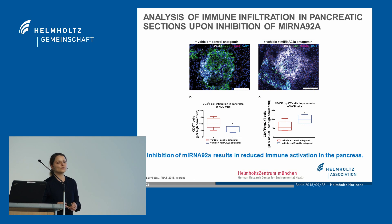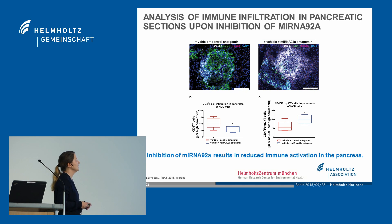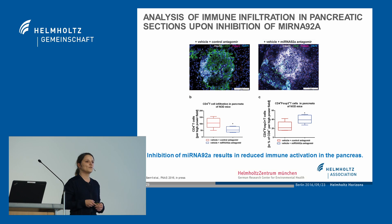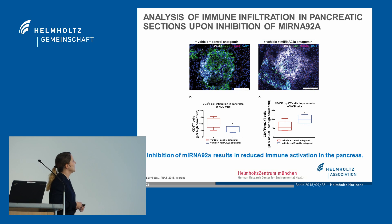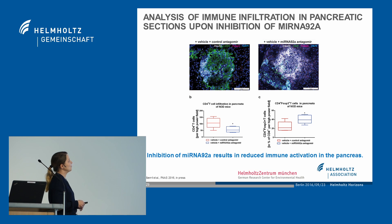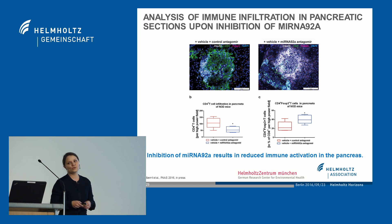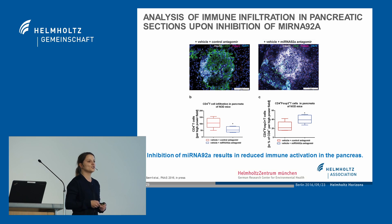As a second example, we focused on microRNA-92A, which we found significantly enhanced during onset of islet autoimmunity. When we performed immunofluorescent staining of NOD mice — a model for murine type 1 diabetes with ongoing islet autoimmunity — shown here for insulin in white, CD4 in green, and FOXP3 in red, we observed that application of a microRNA-92A antagomir results in significant reduction of CD4-positive T cell infiltration directly in the pancreas, while FOXP3-positive regulatory T cells were increased, supporting the notion that inhibition of microRNA-92A can reduce immune activation in the pancreas.